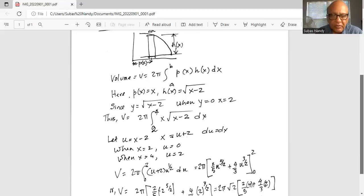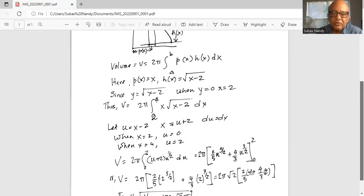Similarly for the next term it's 2 u to the power of half. Integration is u to the power of 3 by 2 divided by 3 by 2 in the denominator where 2 moves to the numerator when inverted. So 4 over 3 is the coefficient of u to the power of 3 by 2.